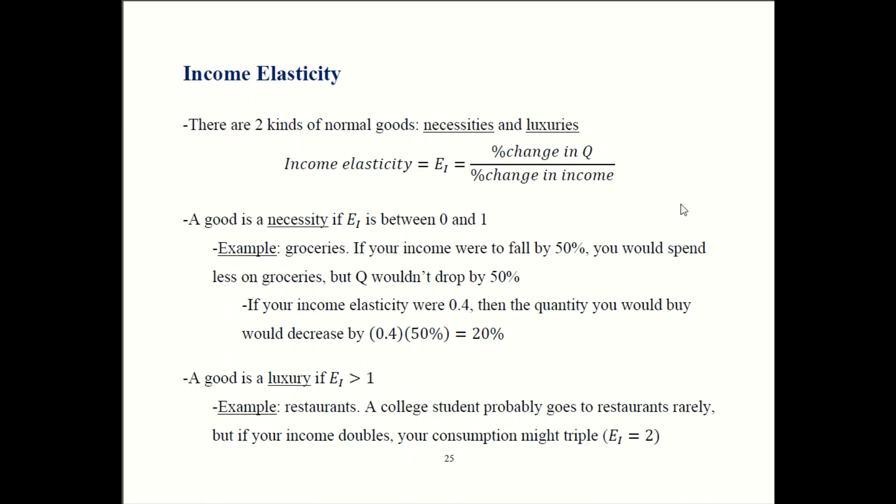Now within the category of normal goods, we have two subcategories. There are necessities and then there are luxuries. So necessity has an elasticity between zero and one. So goods that you really depend upon are ones that you don't change your consumption very much. You change a little bit, but not very much when your income changes.